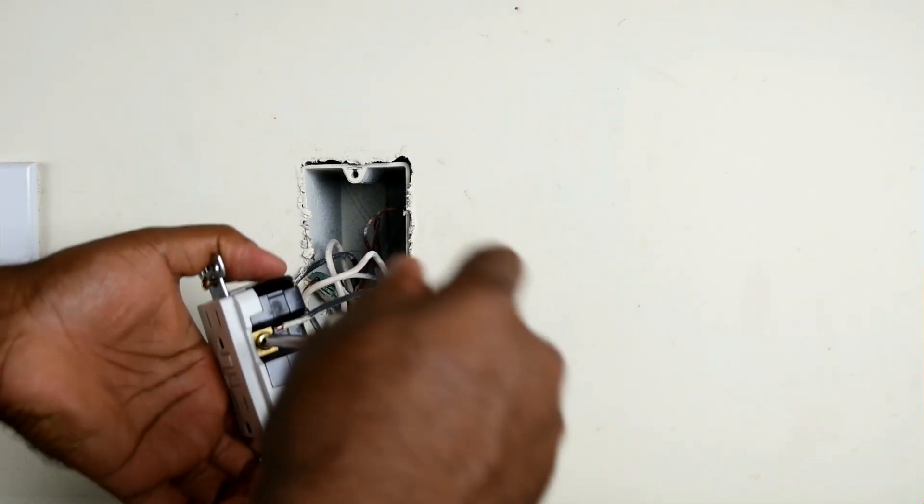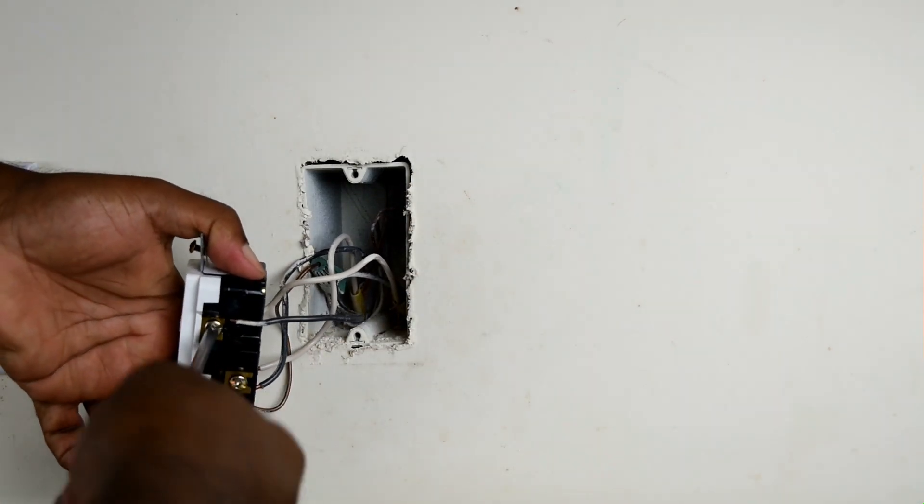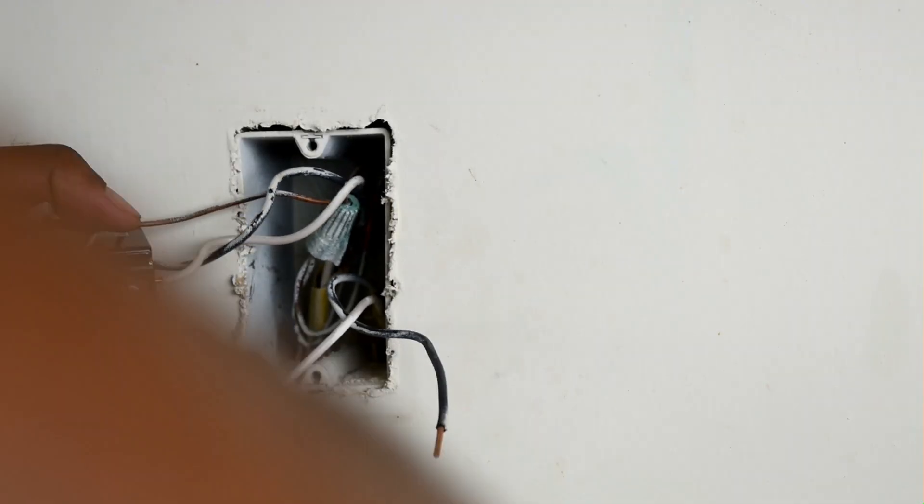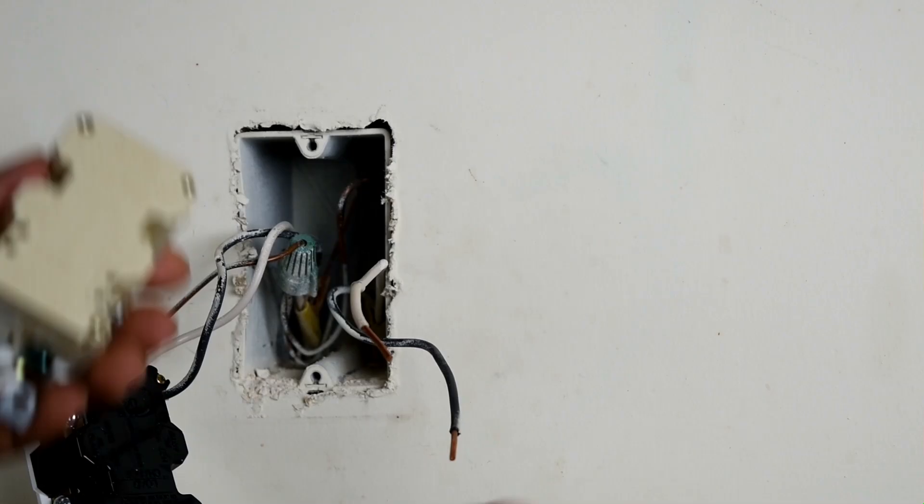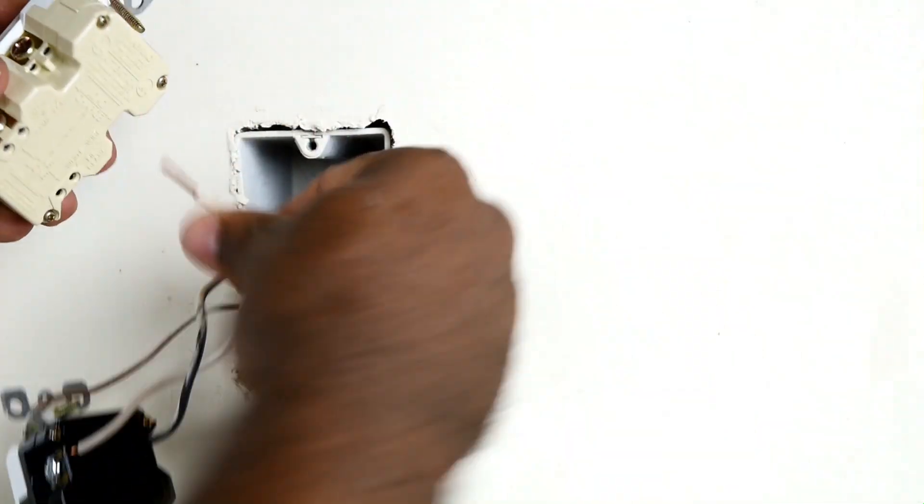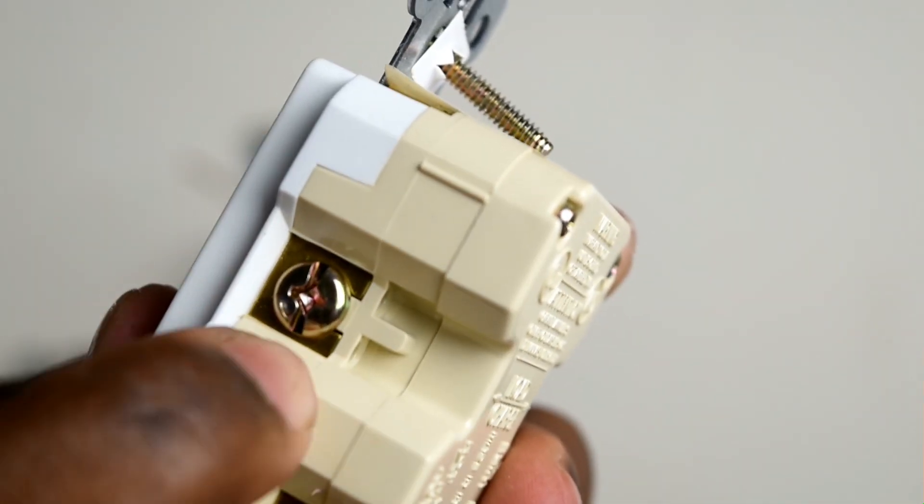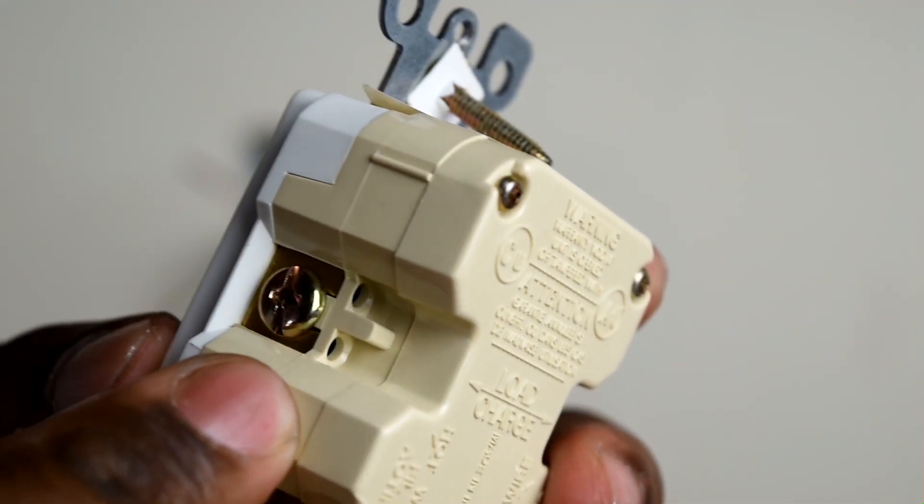So we're going to take our line off. The silver screw will remain to be your neutral and the gold plated screw will remain to be your hot leg.